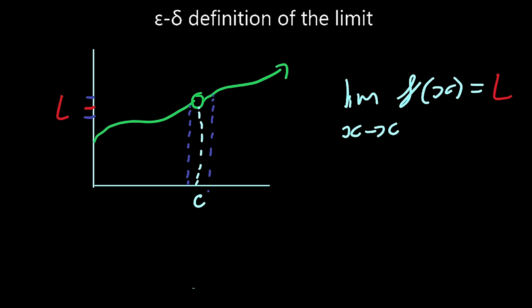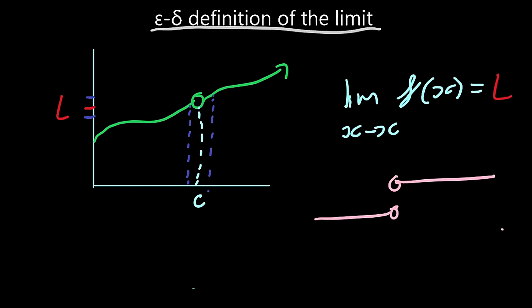You might have come across this — a function that might go like this, and your teacher would say there is no limit, but perhaps someone in the class would suggest there is. So what mathematicians decided to do was come up with a new definition of the limit — and that's what the epsilon-delta definition of the limit is, that's what they came up with.